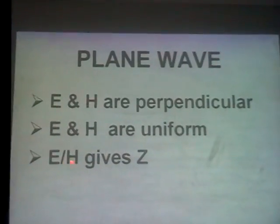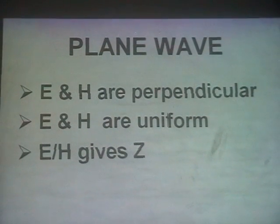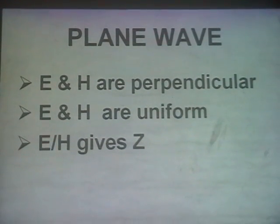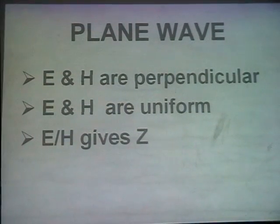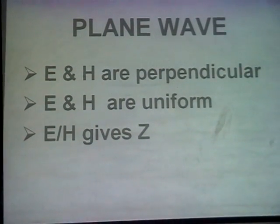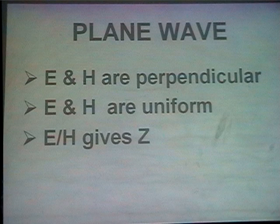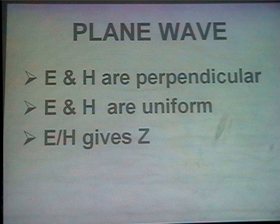In a plane wave, E and H are perpendicular everywhere. The ratio of E to H is uniform and gives the surge impedance. The unit of E is volts per meter and the unit of H is amps per meter. So volts per meter divided by amps per meter gives ohms — that is the surge impedance. This is your electromagnetic wave equation.